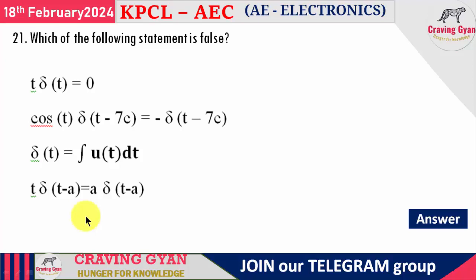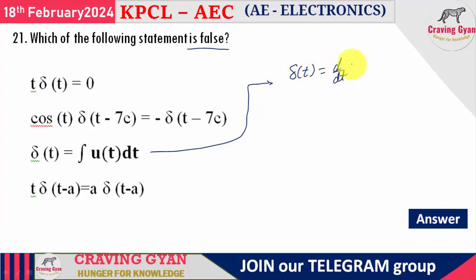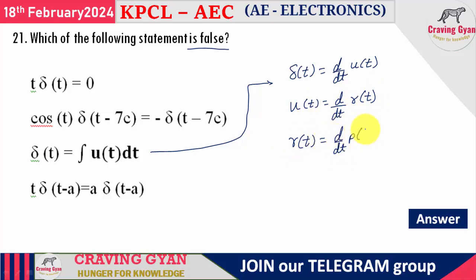Twenty-first question: which statement is false? Option C states that δ(t) equals the integration of u(t) — this is incorrect. The correct relationship is: δ(t) is the differentiation of u(t), u(t) is the differentiation of the ramp signal r(t), and r(t) is the derivative of the parabolic signal. Option C is the false statement.